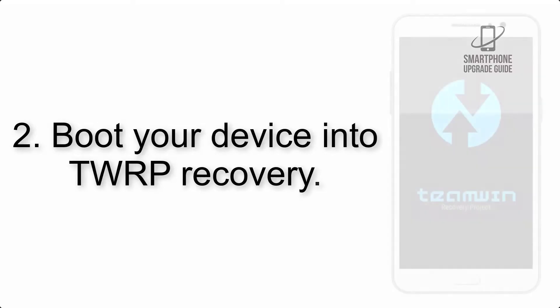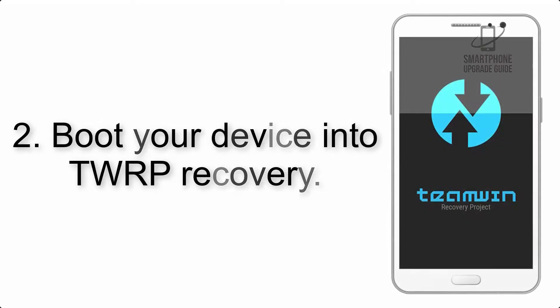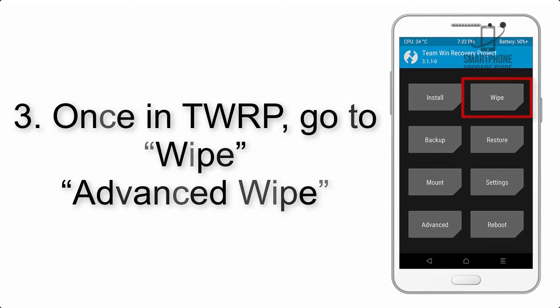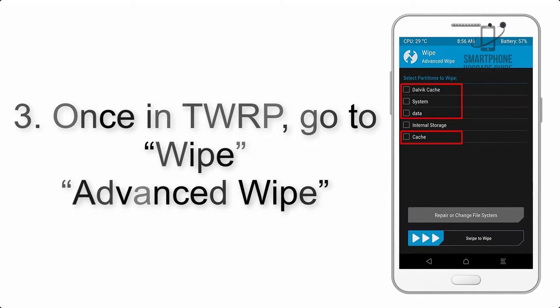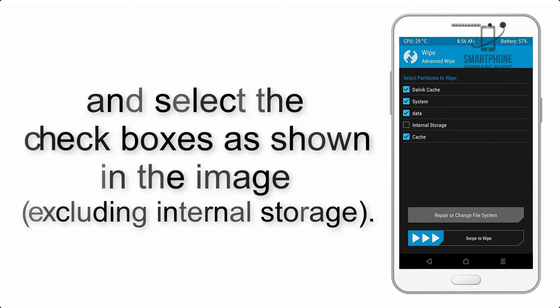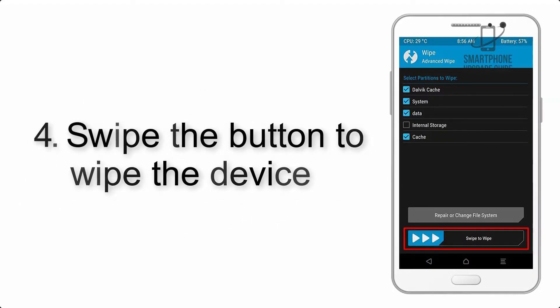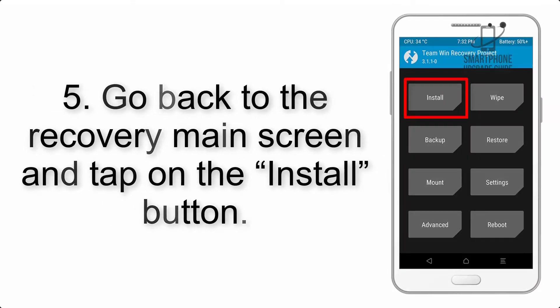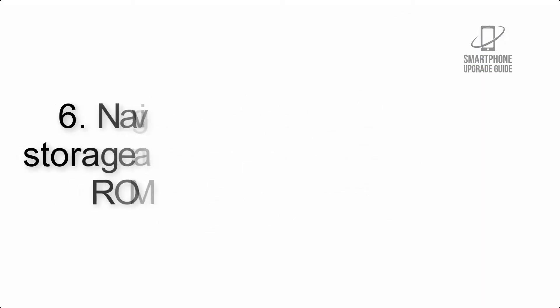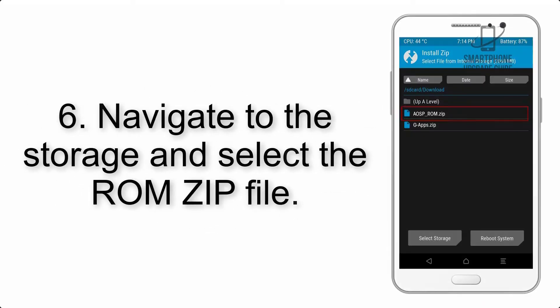Step 2: Boot your device into TWRP recovery. Once in TWRP, click on Wipe, then Advanced Wipe, and select the checkboxes as shown in the image, excluding internal storage. Step 4: Swipe the button to wipe the device.